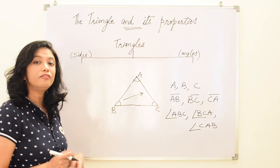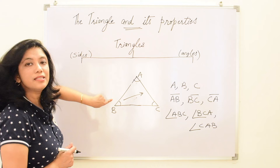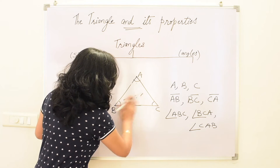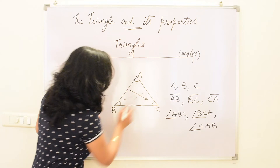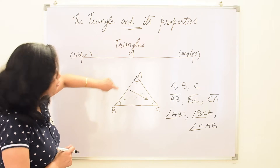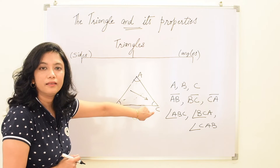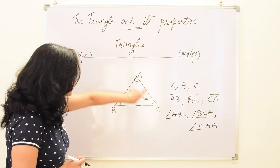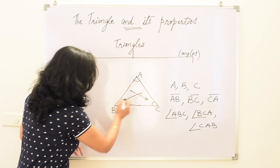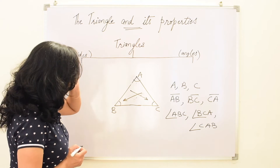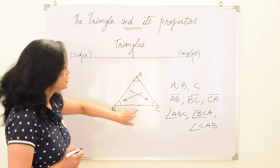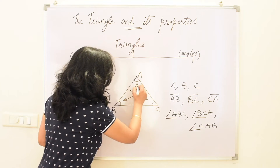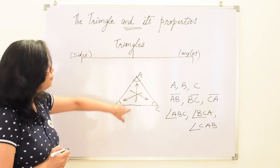Now, which is the angle opposite to side AB? Side AB is this line segment. The angle opposite to it will be angle C. Similarly, the angle opposite to side AC is angle B. And the angle opposite to line segment BC is angle A.